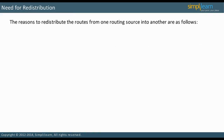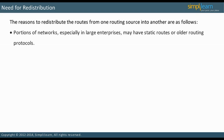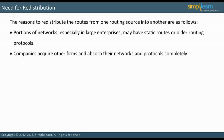Is there a need to redistribute routes from one routing source into another? Yes, and the reasons are as follows. Portions of networks, especially in large enterprises, may have static routes or older routing protocols. Companies acquire other firms and absorb their networks and protocols completely. Let us look at the complications in redistributions.